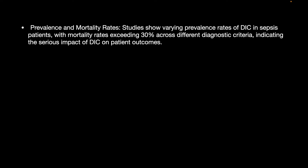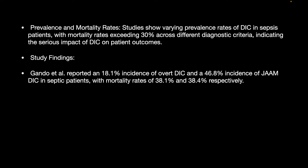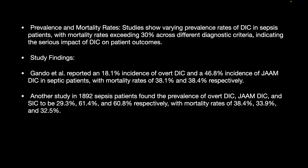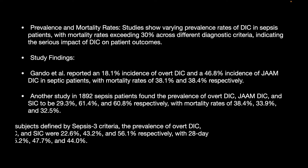Studies show varying prevalence rates of DIC in sepsis, with mortality rates exceeding 30% across different diagnostic criteria, indicating the serious impact of DIC on patient outcomes. Gando et al. reported an 18.1% incidence of overt DIC and 46.8% incidence of JAM-DIC in septic patients, with mortality rates of 38.1% and 38.4% respectively. Another study in 1,892 septic patients found prevalence of overt DIC, JAM-DIC, and SIC to be 29.3%, 61.4%, and 60.8% respectively, with mortality rates of 38.4%, 33.9%, and 32.5%.